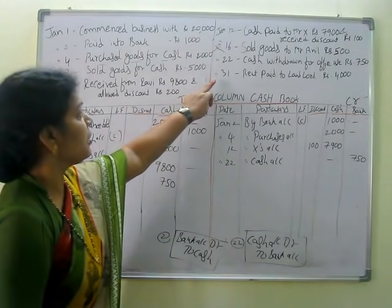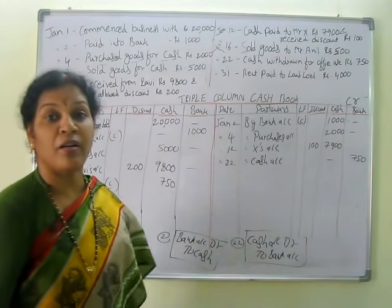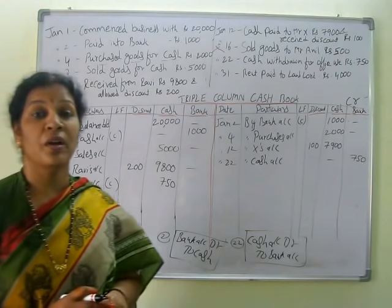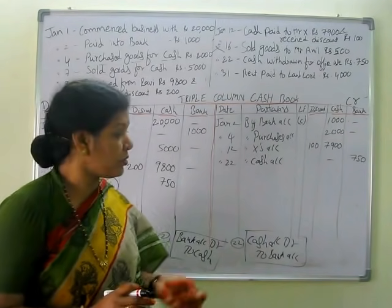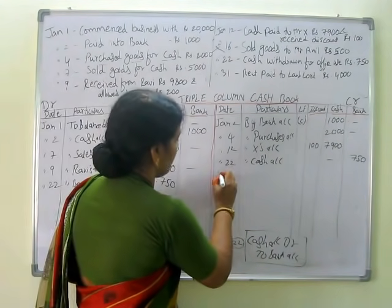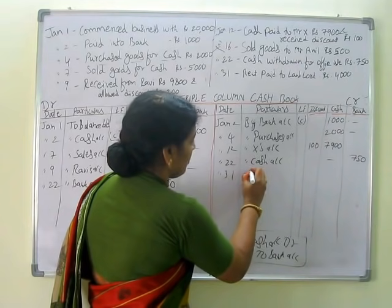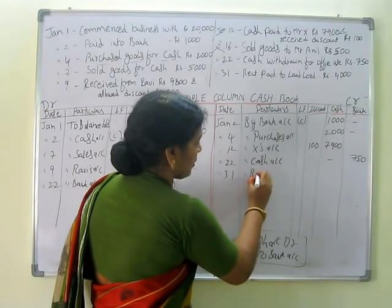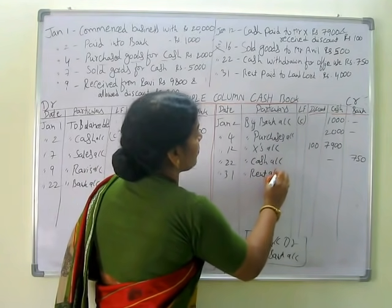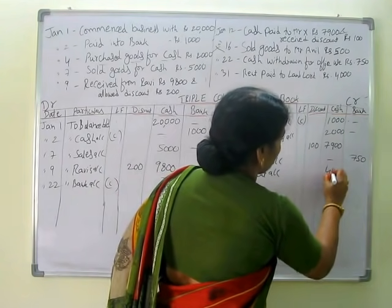The last transaction: January 31st, rent paid to landlord — 4,000. We are paying to the landlord, so it is a payment. January 31st, by rent account, 4,000 in the cash column.